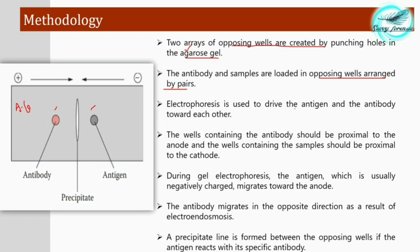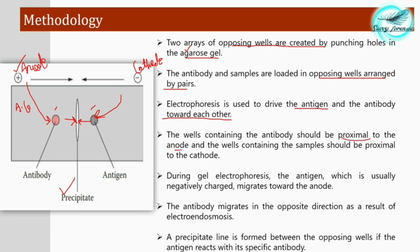Electrophoresis is used to drive the antigen and antibody toward each other. The antibody is placed on the anode side and the antigen on the cathode side. When electric current is passed, they drive toward each other. If they are of the same origin and species, they form a precipitate at the meeting point — an arc-shaped precipitate. The wells containing the antibody should be proximal to the anode, while the sample wells should be proximal to the cathode. During electrophoresis, the antigen, which is negatively charged, migrates toward the anode.